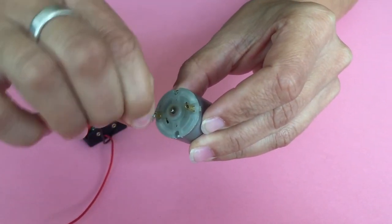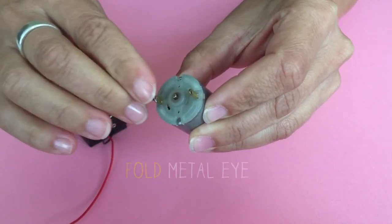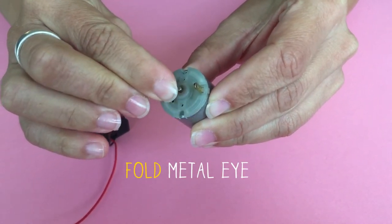The color of the wire doesn't matter. Now fold the metal eye to keep the wire in place.